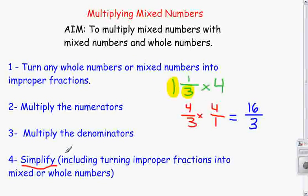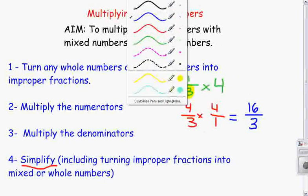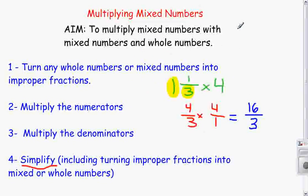Now, once again, whenever I have an improper fraction in my last step, I must simplify. And that means turning this improper fraction back into a mixed number. So I'm going to divide 3 into 16. 3 goes into 16 5 times. 3 times 5 is 15. And I'm left with a remainder of 1.